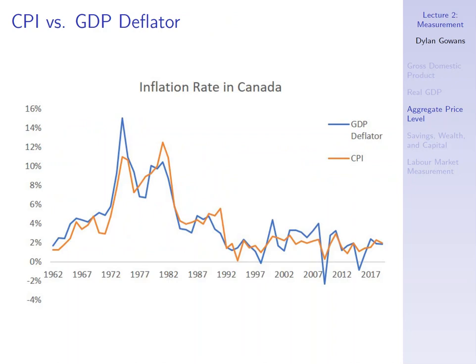CPI and the GDP deflator generally give similar pictures of inflation. Looking at inflation measured by the GDP deflator and by CPI between 1962 and 2018, you'll notice they tend to track each other — they're rarely exactly equal, but they do tend to track each other.